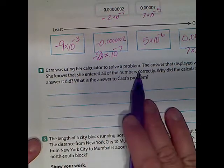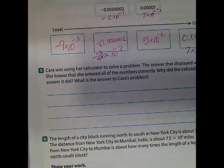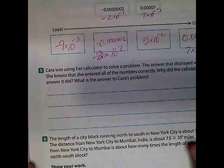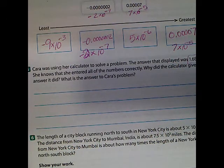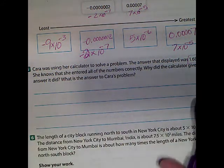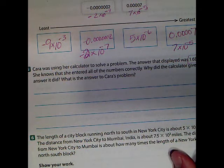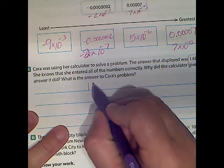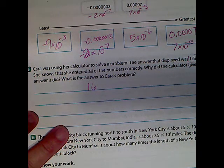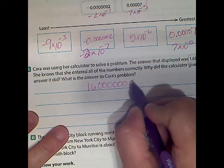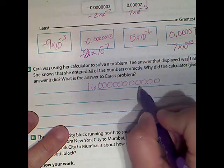Number 5: calculators sometimes display numbers this way. We have an E button on our calculator — EE — which just means an exponent. So 1.6E12 means 1.6 times 10 to the 12th. The calculator gives us this because the standard form number is too big to display. Converting back: 1.6 takes care of one zero, so we need 11 more zeros — that gives us the full standard form answer.